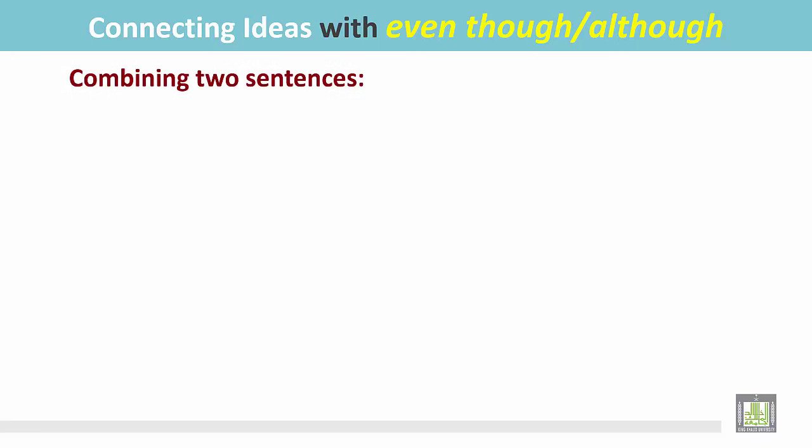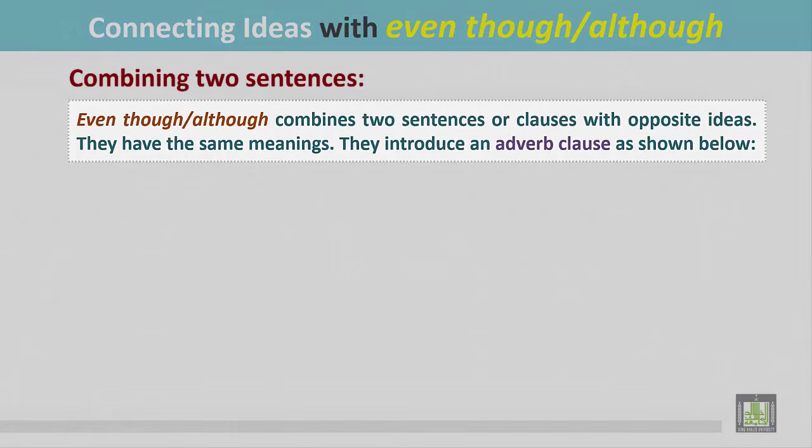Combining two sentences. Even though or although combines two sentences or clauses with opposite ideas. They have the same meanings. They introduce an adverb clause as shown in the structure below.